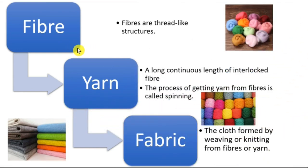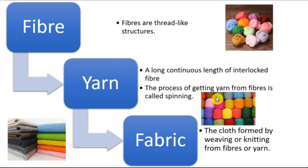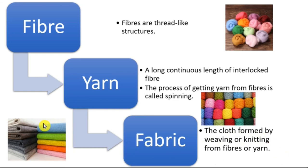Now let's look at the process from fiber to fabric. Fibers are thread-like structures found either in nature or made by human beings. These fibers are spun into yarns. A long continuous length of interlocked fiber is called a yarn. The process of getting yarn from fibers is called spinning. This yarn is further woven or knitted into fabric — a piece of cloth.